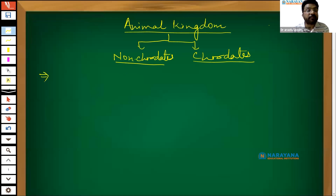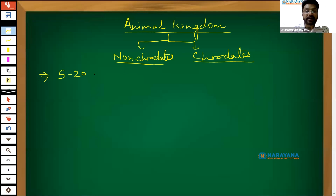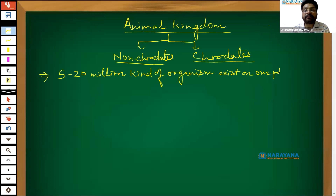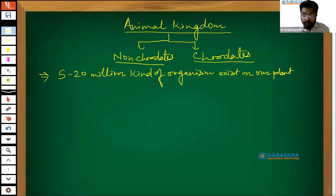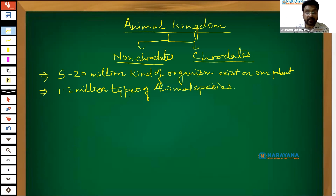About 5 to 20 million kinds of organisms exist on our planet. Out of these, about 1.2 million animal species are so far known. And about 0.2 to 0.5 million plant species are there.